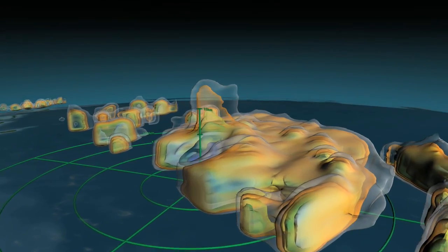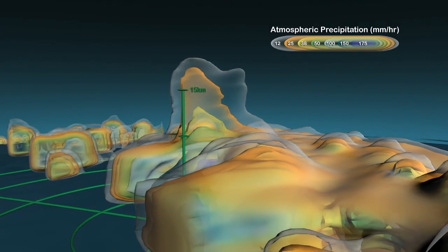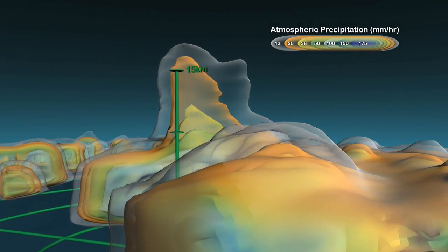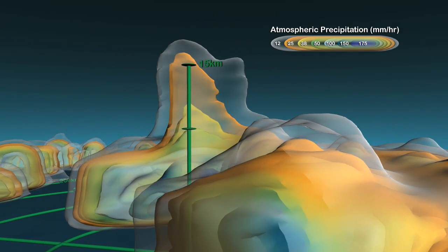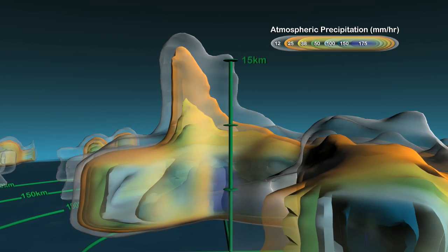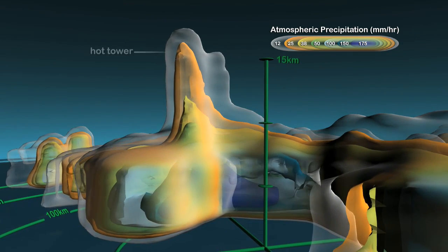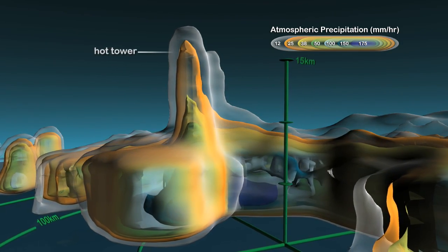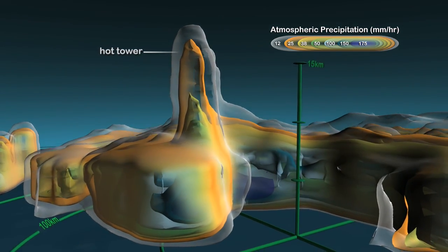Using TRMM measurements, scientists identified a dramatic feature in the structure of Hurricane Bonnie. Towering rain clouds close to the eyewall nearly reached the stratosphere. These structures, called hot towers, extended higher than commercial jets fly.